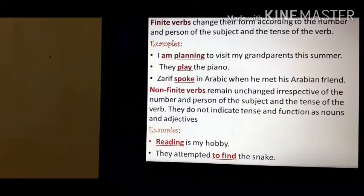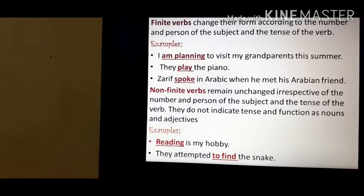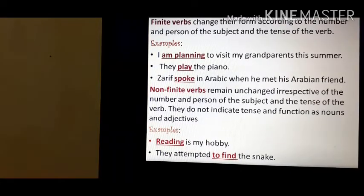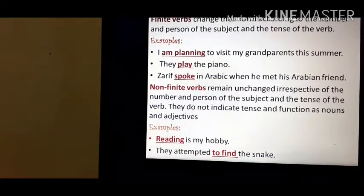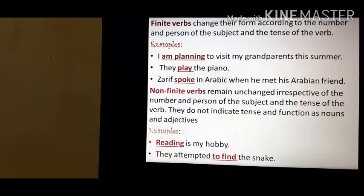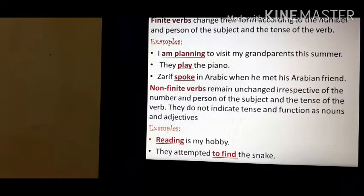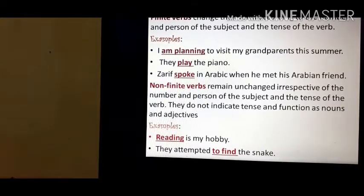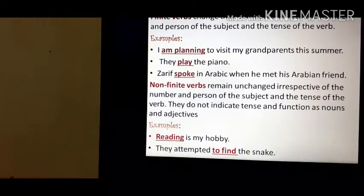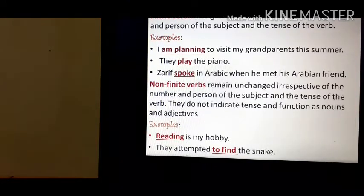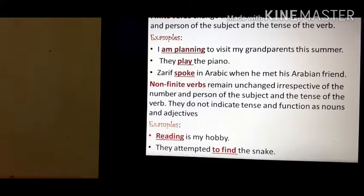See the first example: 'Reading is my hobby.' Here, 'reading' is a gerund and a verb. 'They attempted to find the snake.' Here, 'to find' is an infinitive. In these sentences, the verbs 'reading' and 'to find' do not change their forms in relation to the person and number of the subject. If I say 'Reading was my hobby' — suppose it was earlier my hobby — am I changing the verb? No. So in non-finite verbs, the verb remains unchanged irrespective of the number, person, and tense.